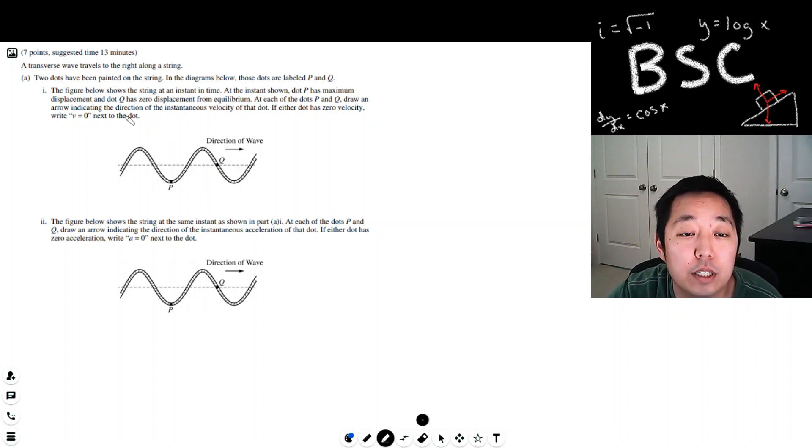At each of the dots P and Q, draw an arrow indicating the direction of the instantaneous velocity of that dot. If the dot has either zero velocity, write V equals zero next to the dot. Okay, so if the wave is going up, then what is P going to do? P can't move like the rope isn't moving sideways. They can only go up and down, right? That's kind of how a wave works.